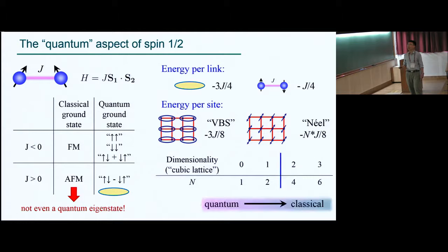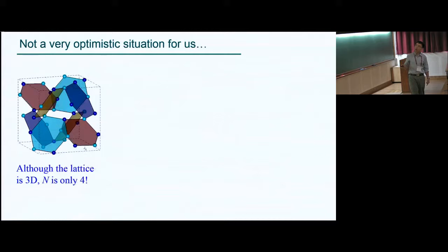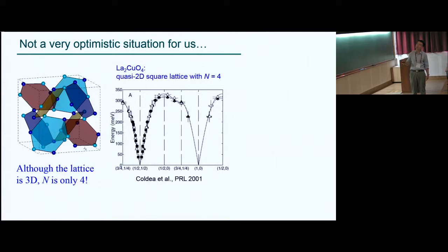And actually, for instance, if we think about cubic lattice, then this crossover from quantum situation to classical situation would happen somewhere between one and two dimensions, or two and four neighbors. And now, for our system, if only J1, the nearest neighbor interaction, is there, even though the lattice is 3D, actually, the number of neighbors is only 4. That's a pretty bad situation for us.